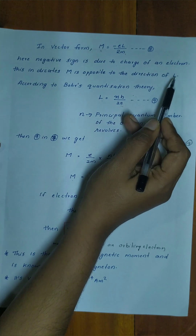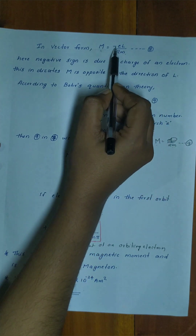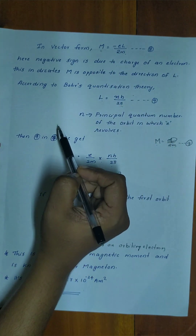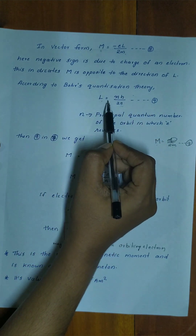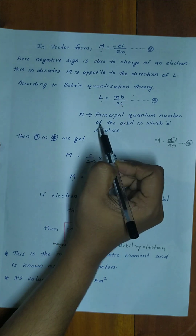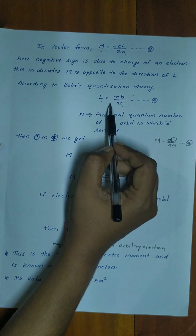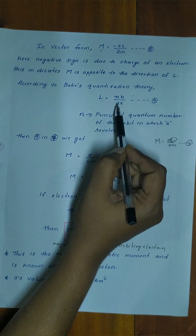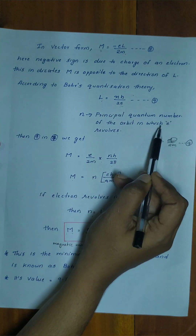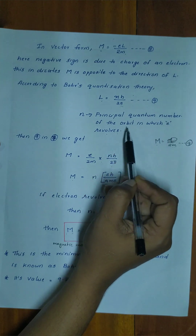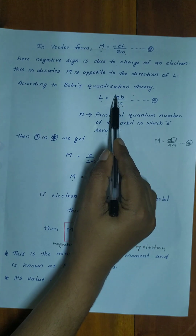According to Bohr's quantization theory, angular momentum L can be written as nh/2π, where n is the principal quantum number of the orbit in which the electron revolves.